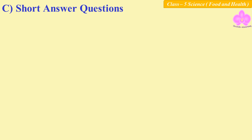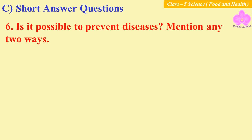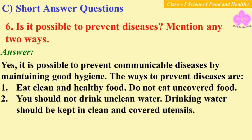Question number six: is it possible to prevent diseases? Mention any two ways. Yes, it is possible to prevent communicable diseases by maintaining good hygiene. The ways to prevent diseases are: number one, eat clean and healthy food and do not eat uncovered food.